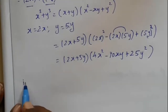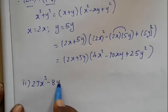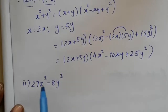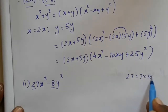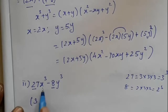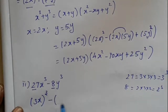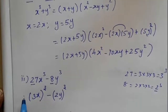What is the sum? 27x cubed minus 8y cubed. Let's take a look at the numbers. 27 is 3 into 3 into 3, and 8 is 2 into 2 into 2. So we can write this as 3x whole cube minus 2y whole cube.